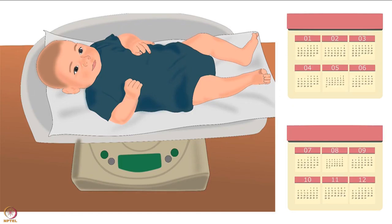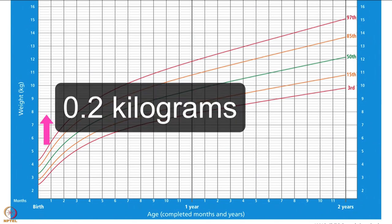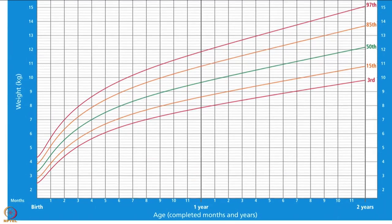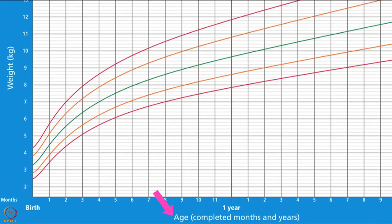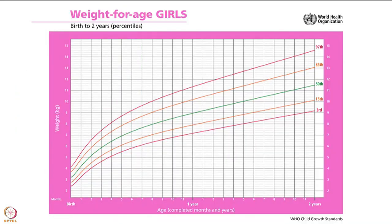Weight for Age reflects body weight according to the child's age. On Weight for Age Charts, the Y-axis shows weight in kilograms. The horizontal lines mean an increase in weight by 0.2 kgs or 200 grams. The X-axis shows age, starting with 0 at birth. Age is plotted in completed months and years from 0 to 2 years of age.